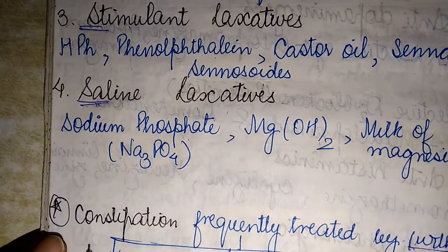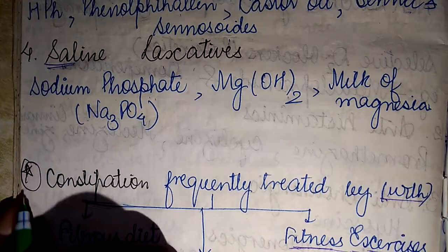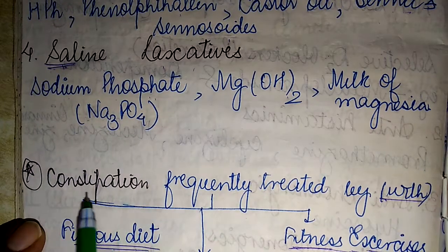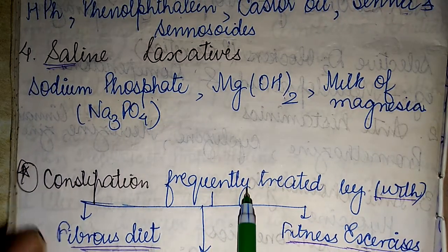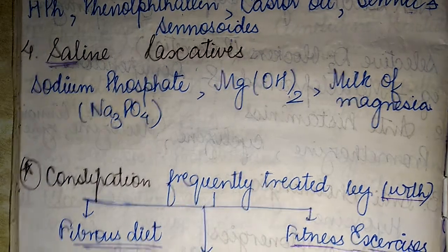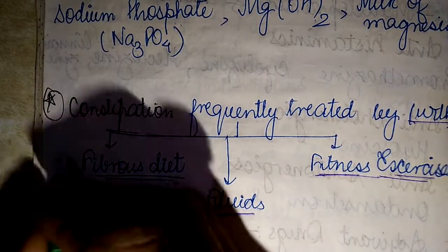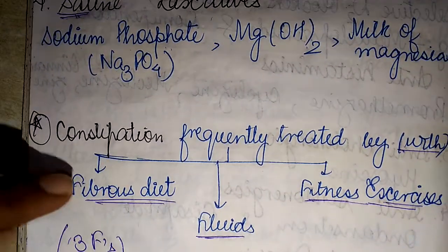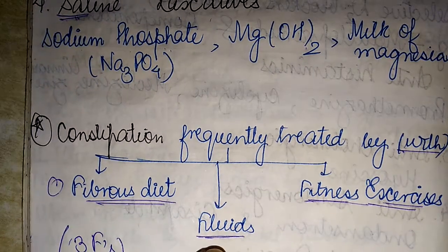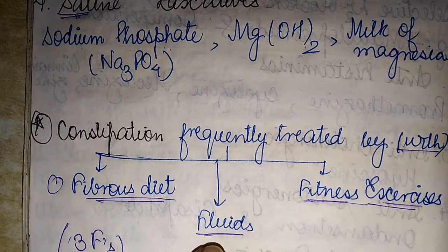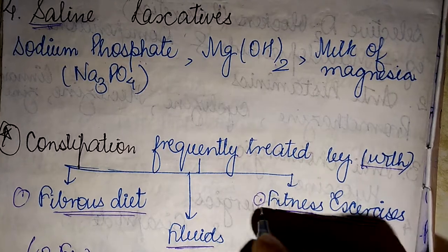Constipation can also be frequently treated using traditional approaches. The most common non-drug methods include the 3Fs: the first F for fibrous diet, the second F for fluids, and the third F for fitness exercises.